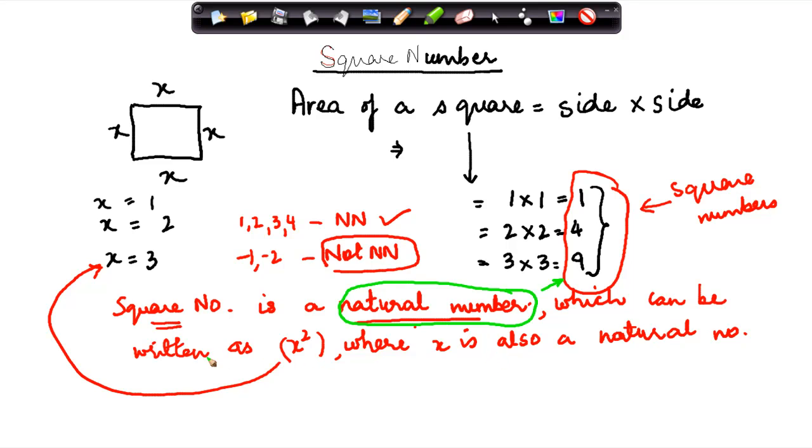Now a natural number which can be written as x square. So 1 can be written as 1 square because it is 1 into 1. This basically means how many times you need to multiply a particular number. So suppose if you have 5 square, that means 5 into 5. If you have 5 to the power 3, that is equal to 5 into 5 into 5. You multiply the same number as many times as this is called the power of that number.